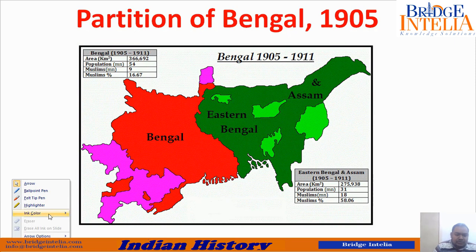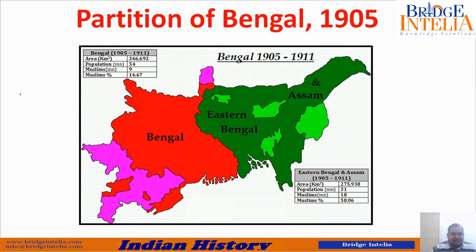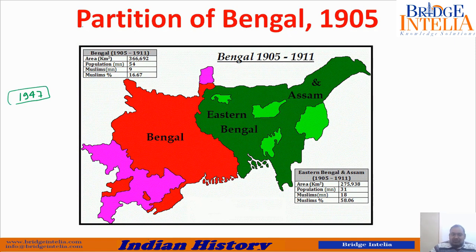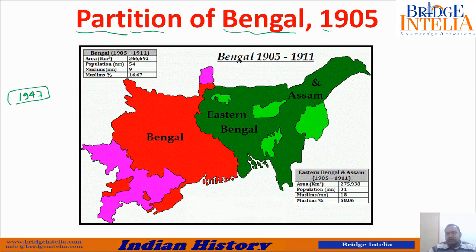Most Indians are aware of the partition that took place in 1947, the partition that carved out Pakistan and Bangladesh. But very few are aware of another partition that had taken place much before — the Partition of Bengal. It took place in 1905, and it was another kind of partition, not the same kind that took place in 1947.